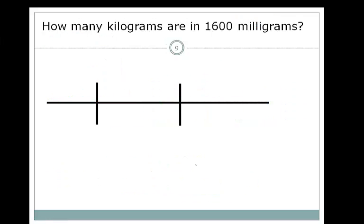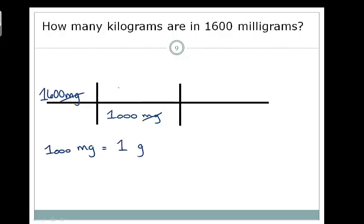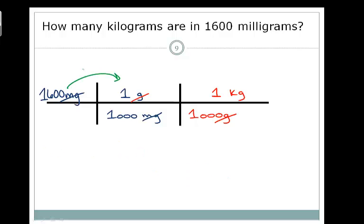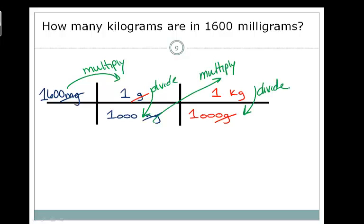How many kilograms are in 1,600 milligrams? Put 1,600 milligrams in the top left. We know the relationship between milligrams and grams: 1,000 milligrams on the bottom to cancel, 1 gram on top. We also know 1,000 grams equals 1 kilogram, so 1,000 grams on the bottom and 1 kilogram on top. Math: multiply and divide, multiply and divide — 1,600 times 1 divided by 1,000 times 1 divided by 1,000 equals 0.0016 kilograms.